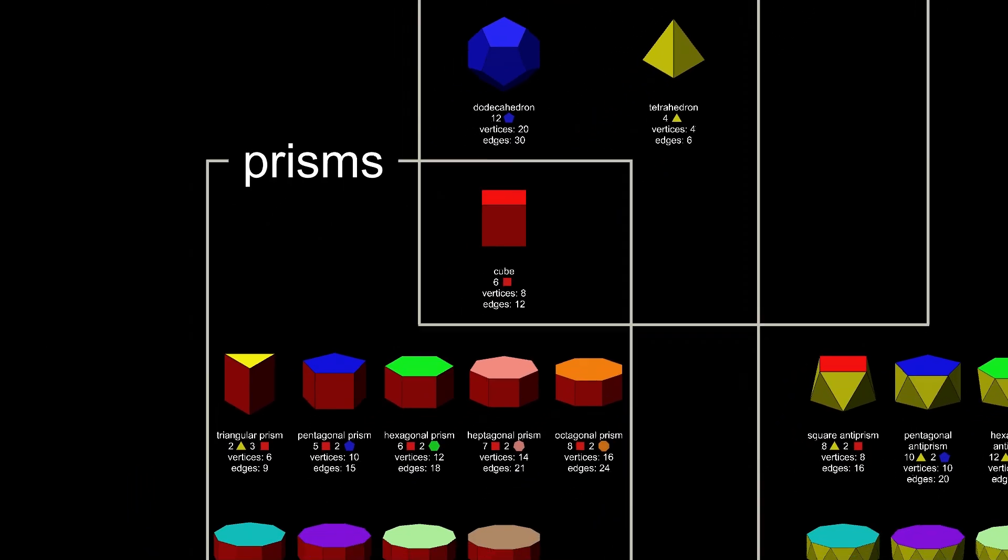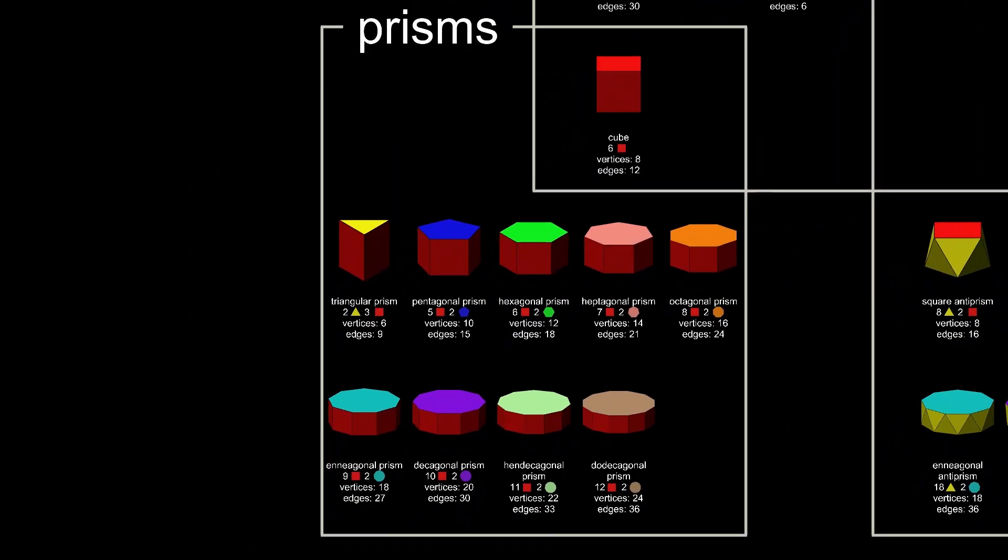Next we have the prisms, two identical end faces separated by a ring of squares. There are an infinite number of these. I've only shown them up to the dodecagonal prism. Note that a square prism is also a cube, so it sits in two families.